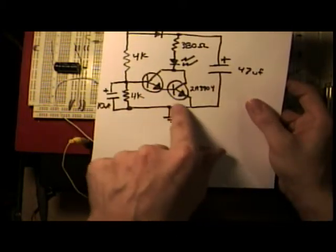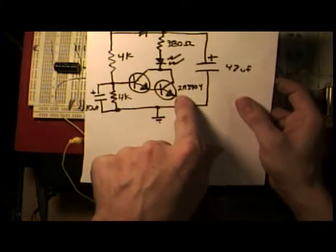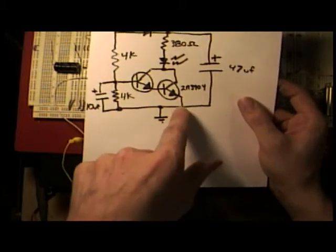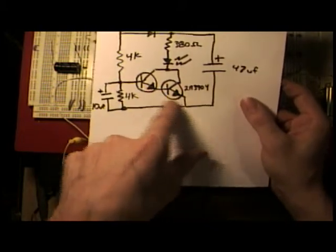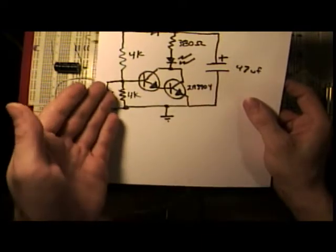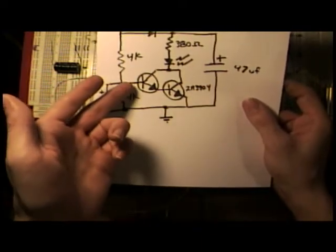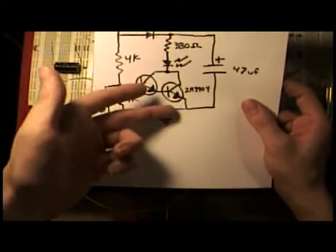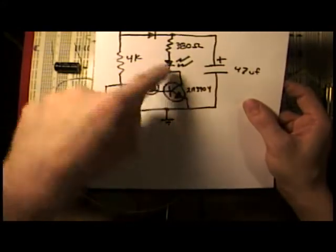Here we have a Darlington pair, which I just built out of 2N3904 NPN transistors. This is a high-gain circuit that doesn't take very much current to turn on a voltage path through this LED.